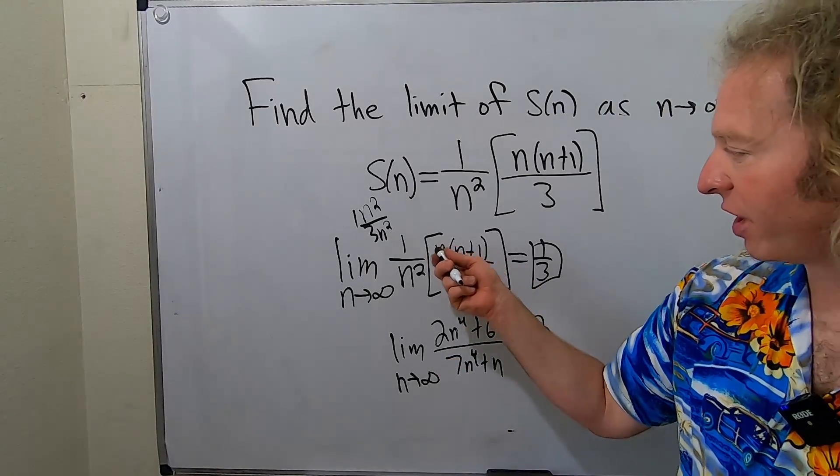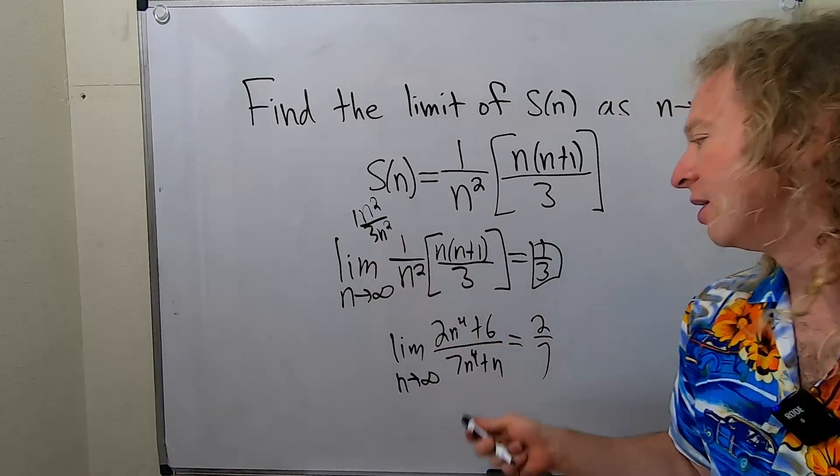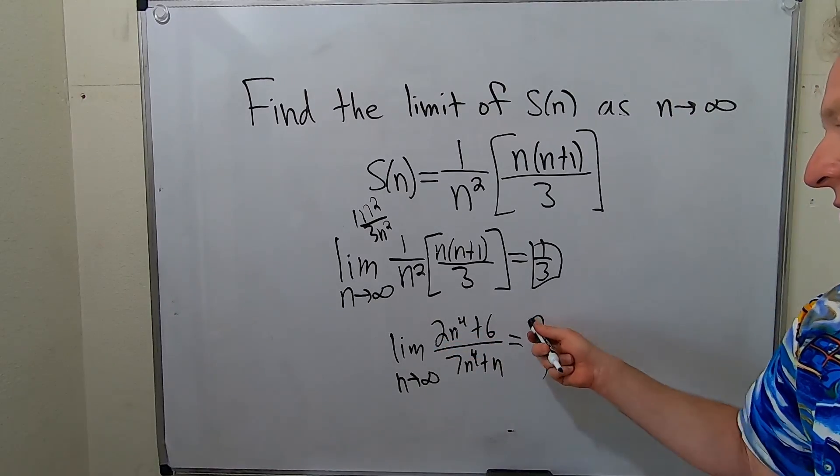It's the same thing here, right? We have n squared, 3n squared, so 1 over 3. Same thing here, 2 over 7, 2 over 7.